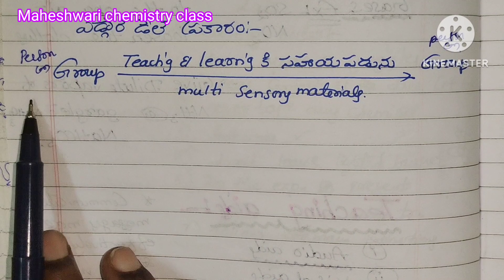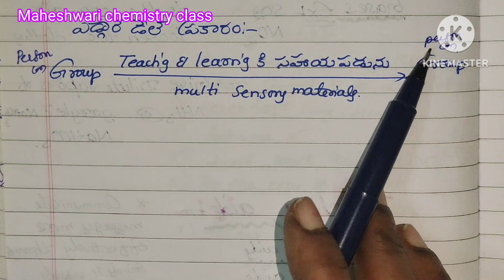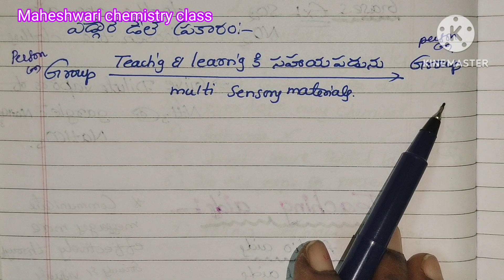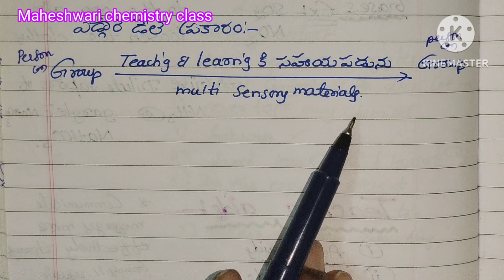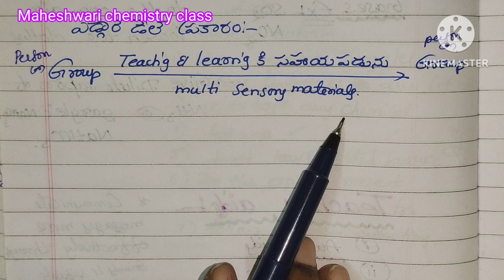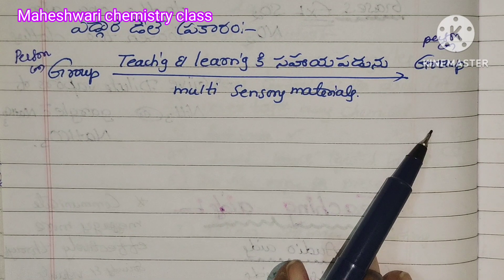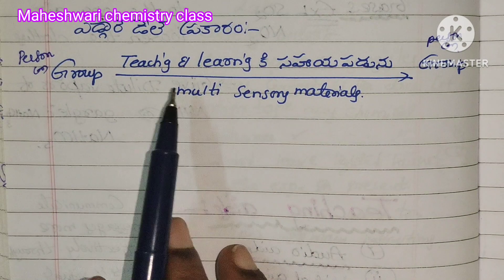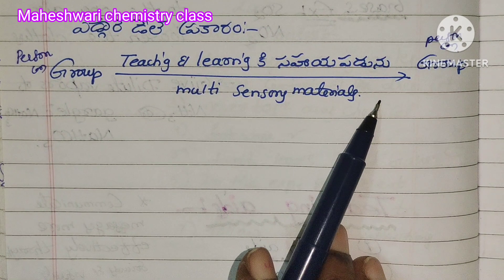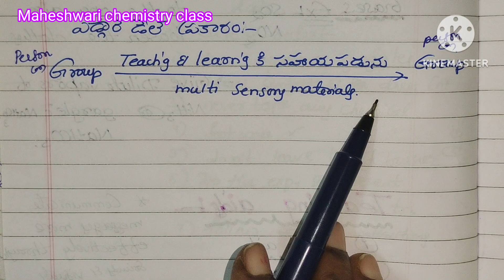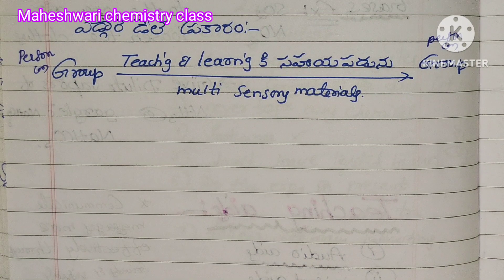So, in Edgar Dale's definition: persons or groups use multi-sensory materials through which knowledge is generally transported and communicated. This is Edgar Dale's definition of audio-visual aids.